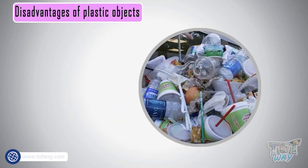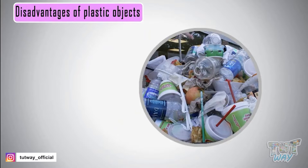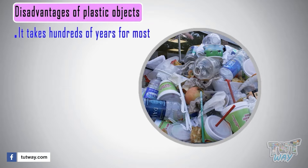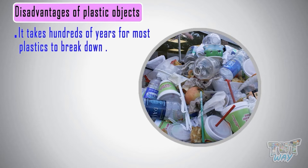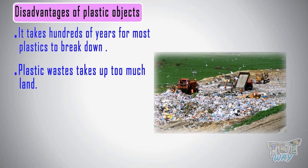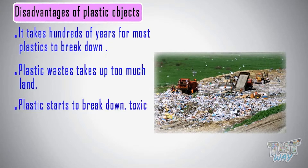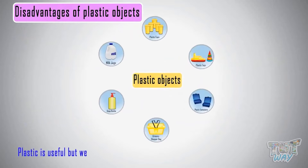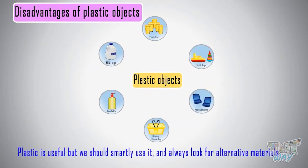Now let's see some disadvantages of plastic objects. The first and foremost disadvantage is that it takes hundreds of years for most plastics to break down. Plastic waste takes up too much land, and there are already big land areas full of waste plastic. When plastic starts to break down, toxic chemicals are released that are harmful to the environment and living things.